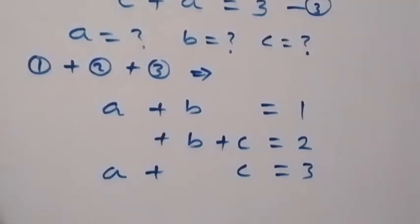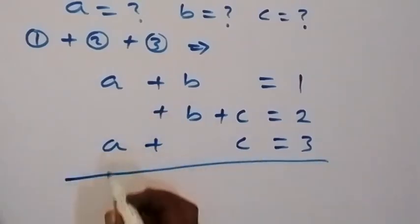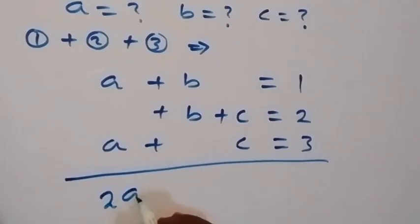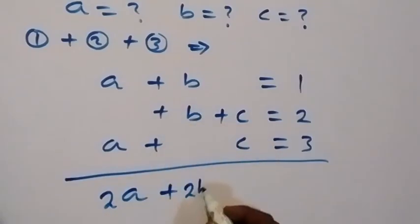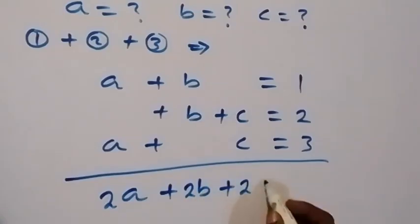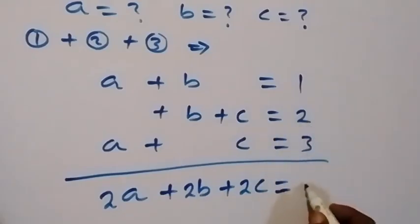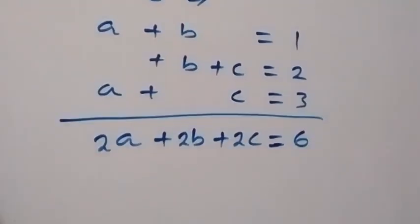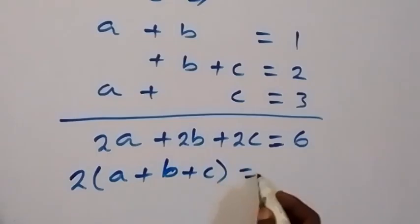Now, what we have all together now, here a plus a. This becomes 2a here. Then plus, here we have 2b. Then plus, here we have 2c. We can factor it out. And this becomes 2 times a plus b plus c. Now, equals to 6.